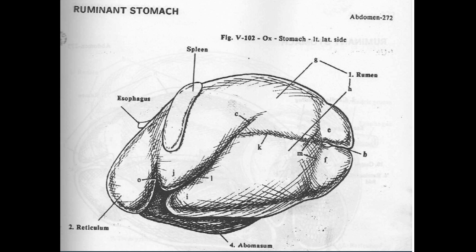The ventral sac of the rumen forms ruminal recess at the cranial aspect of the ventral sac. At the cranial aspect of the rumen, the cranial sac is present dorsally and ruminal recess is present ventrally.